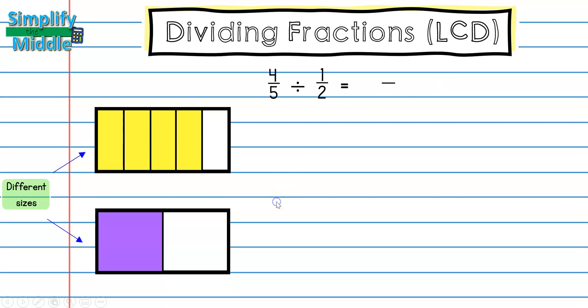Notice that this time these are different sizes. If you look right here, this is one, two, and a little bit of a third. So in order for me to be able to compare or be able to look for groups of one-half, they have to be in least common denominator.